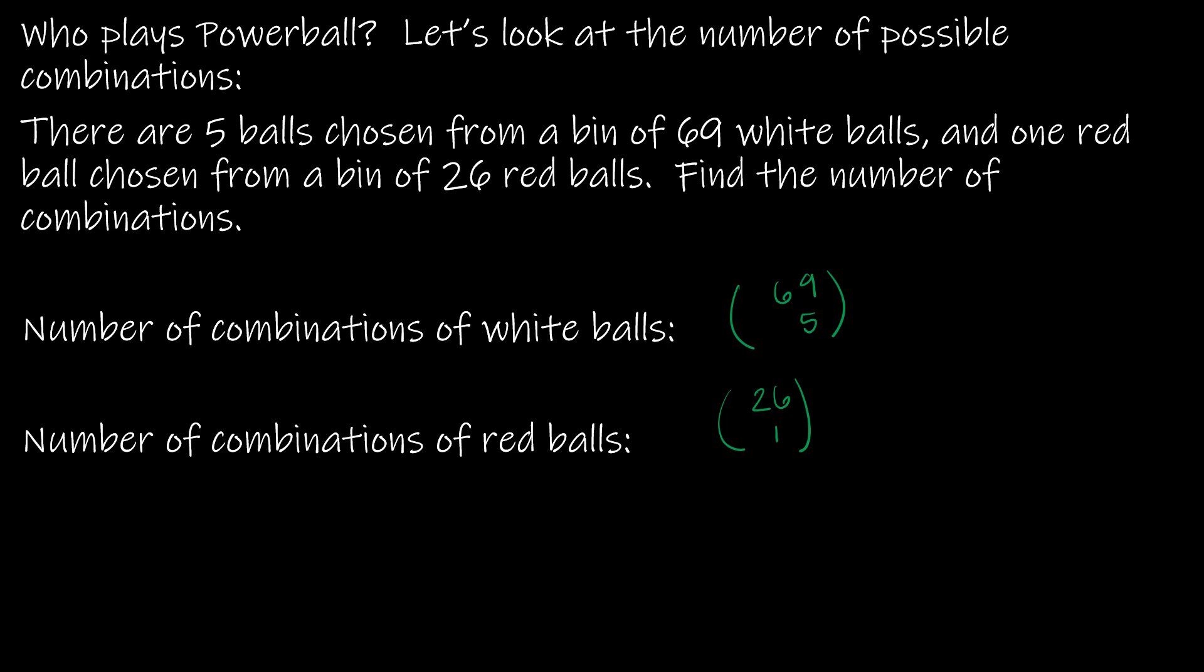So the number of combinations of white balls is 69 choose 5. The number of combinations of red balls is 26 choose 1. So rule of products says the total is just multiplying 69 choose 5 times 26 choose 1, which is 292,201,338, which means if you're playing the Powerball, you have a one in 292,201,338 chance of winning the jackpot.